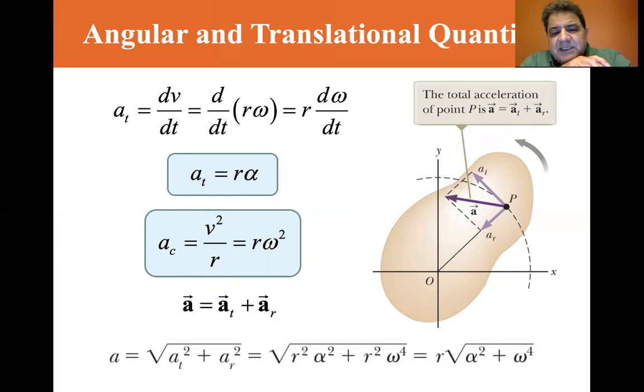So you see at is r alpha, so r alpha squared is r squared alpha squared. And the radial acceleration is the centripetal acceleration and that's r omega squared. So you square that, you get r squared omega to the fourth. Well, you can pull the r out, distributed property r squared, then take the square root of it. You have r times the square root of alpha squared plus omega to the fourth.